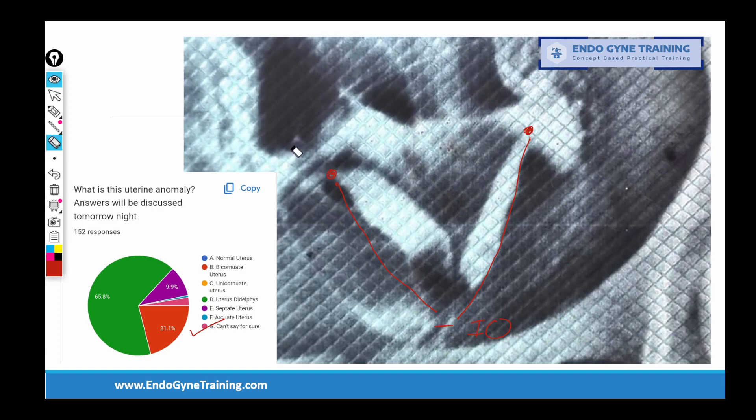The point comes to how exactly does one differentiate between these three entities of septate, bicornuate or didelphys uterus. The answer is you require a modality that tells you what is the external contour of the fundus. That external contour can be either a dipping down contour like this or a straight contour like this. In which case, this would be a septate uterus and this would be bicornuate. If the horns are completely divided all the way down with two separate cervices, maybe we could call it didelphic uterus. But it is not possible to know this on HSG.